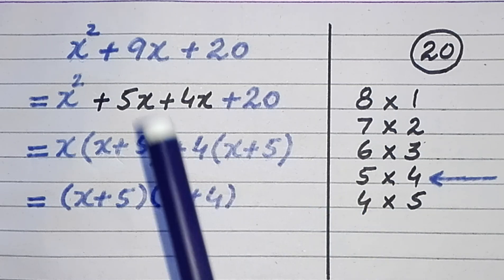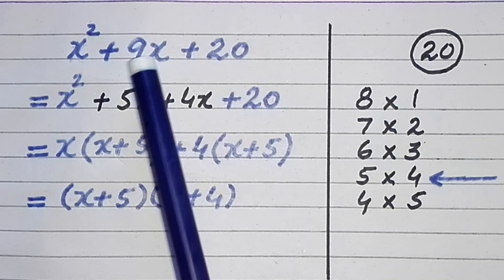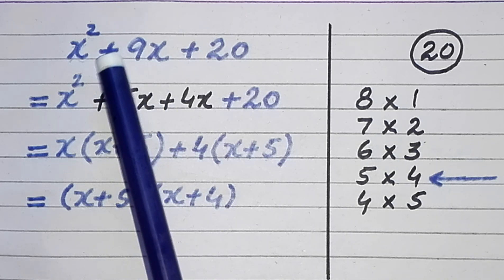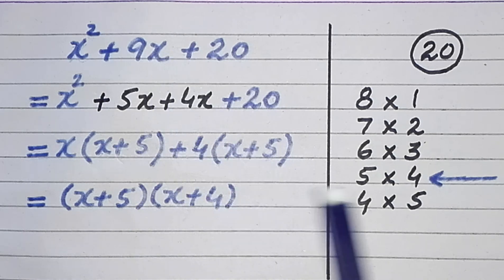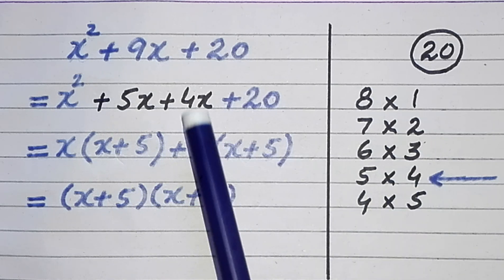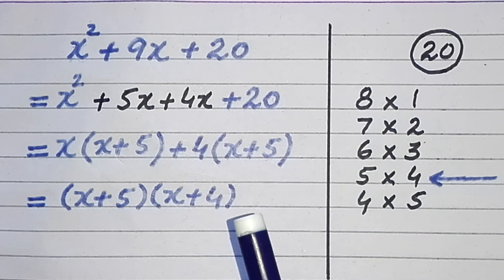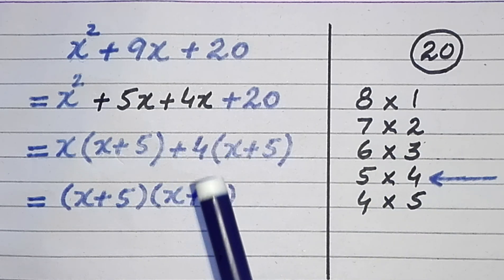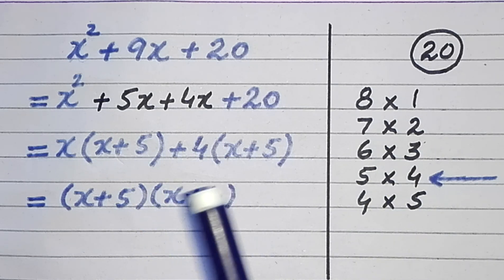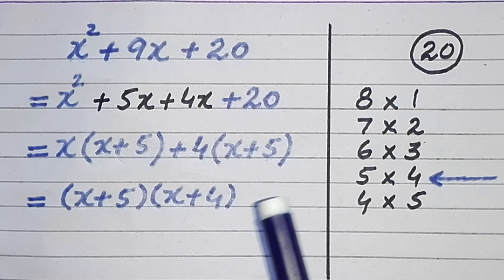In the fifth step we break the middle term into two terms. So in place of plus 9x we write plus 5x and plus 4x. In the sixth and final step we do simple factorization.